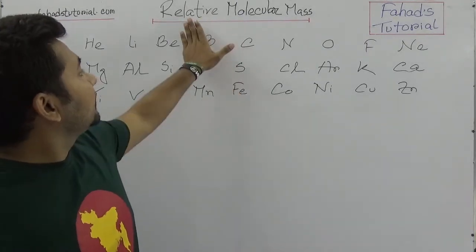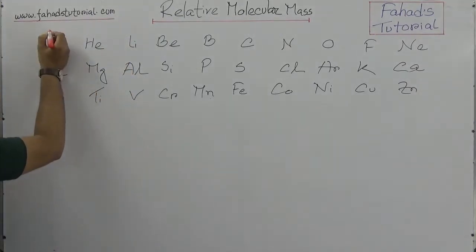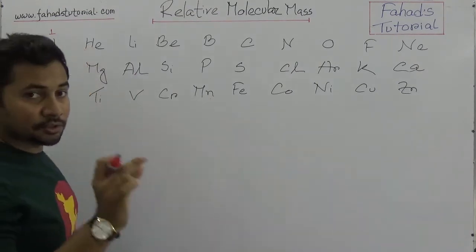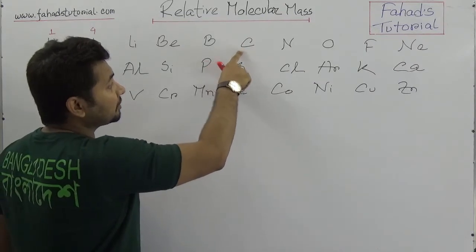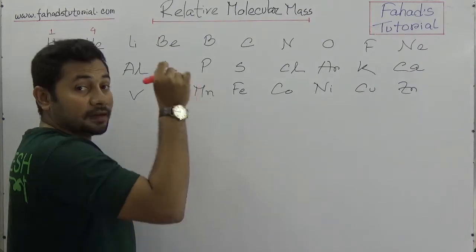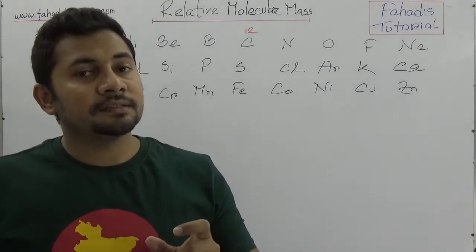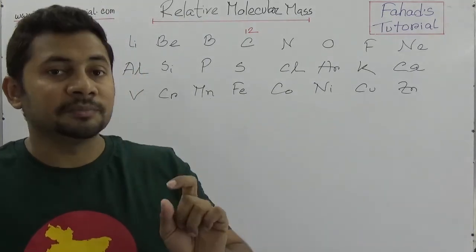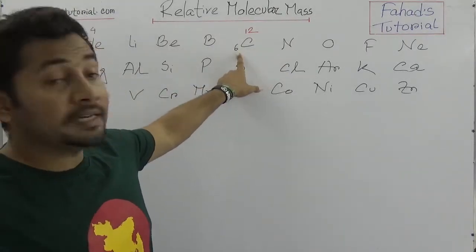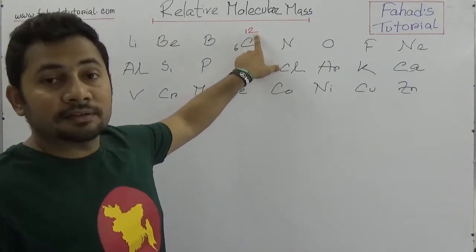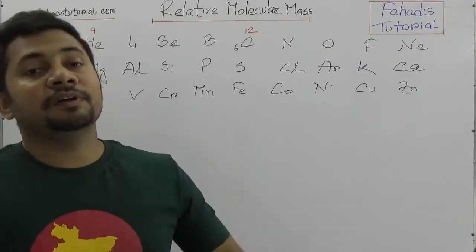To understand relative molecular mass, we need to know the atomic mass of each element. For example, hydrogen is 1, helium's relative atomic mass is 4. For carbon, the proton number is 6 but the relative atomic mass is 12 — it's not simply twice the proton number. The atomic mass is based on 1/12th of the carbon-12 isotope, and using that atomic mass unit we figure out the relative atomic mass of all elements.